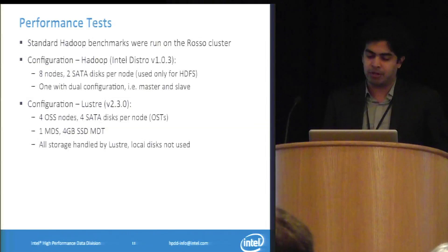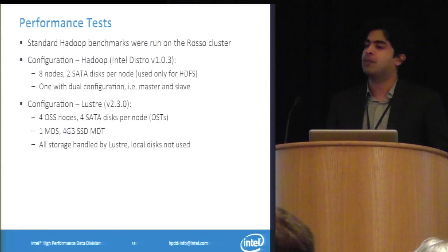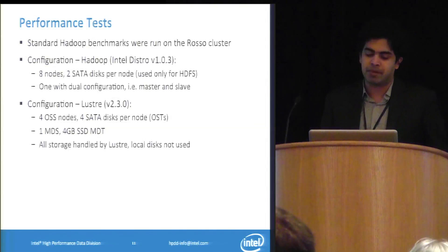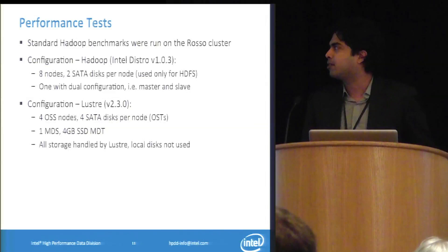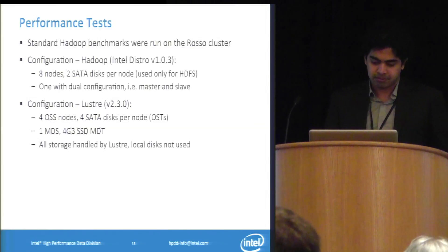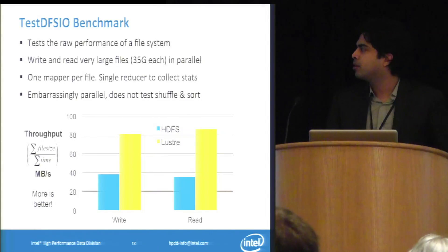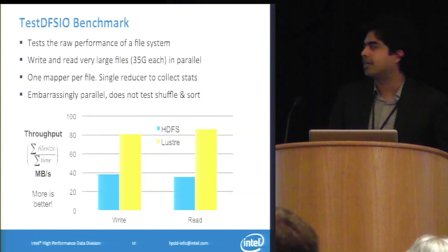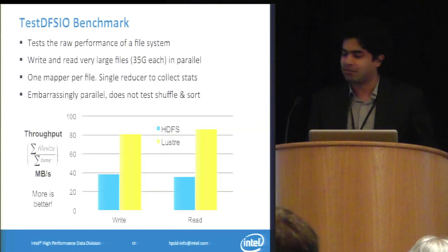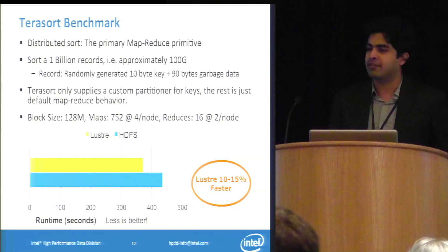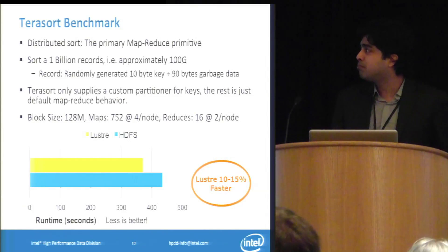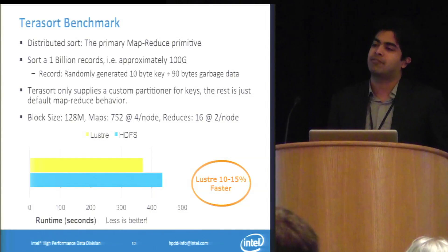We ran some performance tests — pretty small scale actually, just eight Hadoop nodes, with four OSSs with four disks attached. We tried to have a fair comparison, keeping the number of disks the same: each of the eight nodes had two SATA disks attached, making 16 disks total, with a similar configuration for Lustre. The first benchmark was TestDFSIO, which tests raw distributed file system I/O — complete sequential read and write throughput. The second benchmark, which really simulates typical MapReduce workloads and stresses the shuffle phase, is TeraSort — essentially a distributed sort done by the framework itself, with a custom partitioner ensuring each reducer gets roughly the same amount of data.